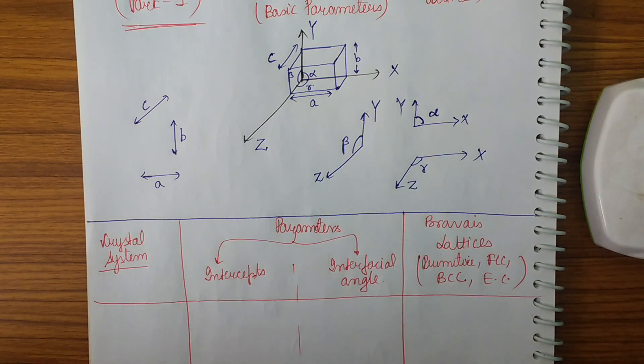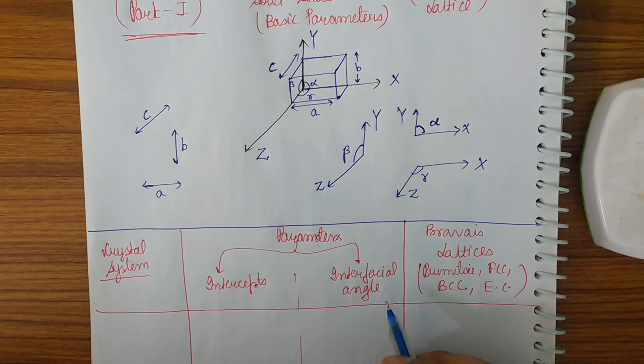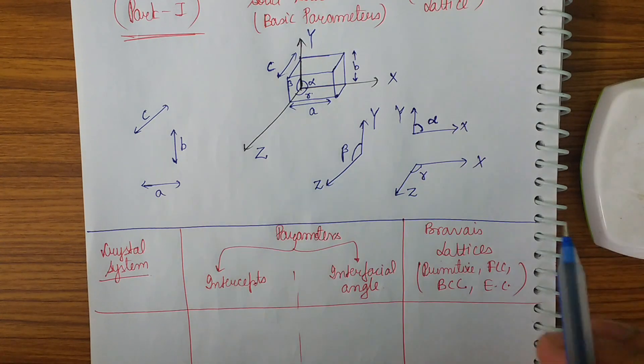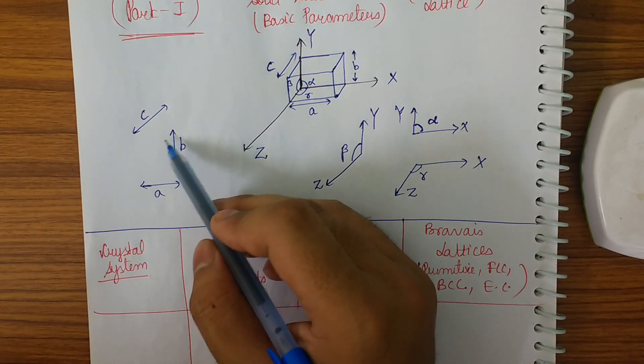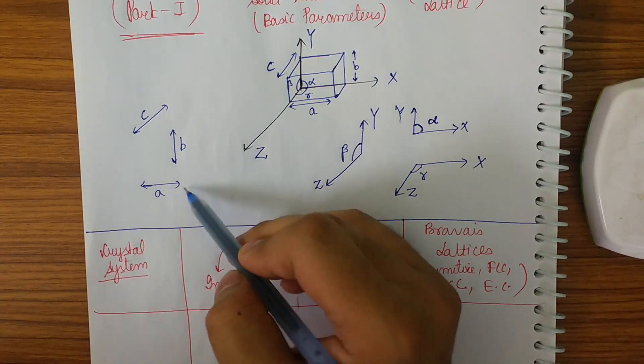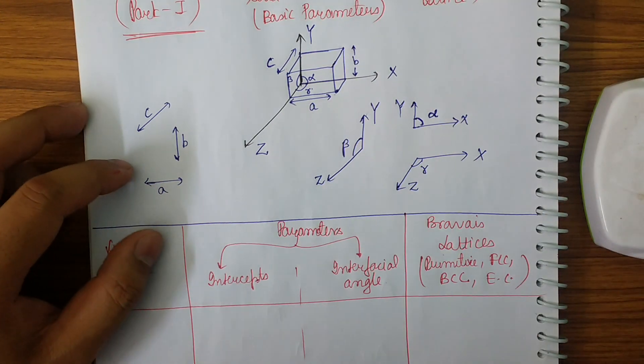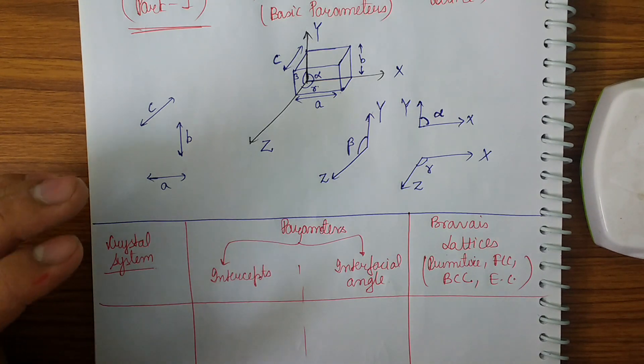With the help of these parameters, these are the angle parameters and the side parameters are taken to be a, b, and c. You can see I have written separately so that you can understand it very well. So c, b, a - b is this, a is this, and c is this. These are the parameters.